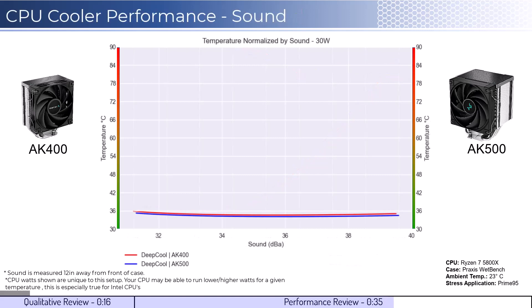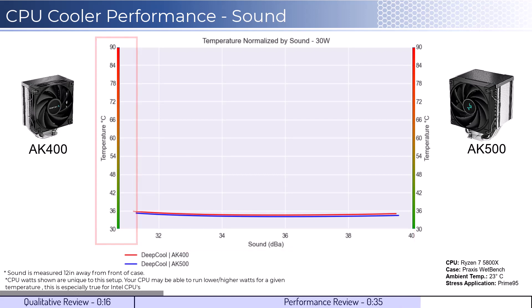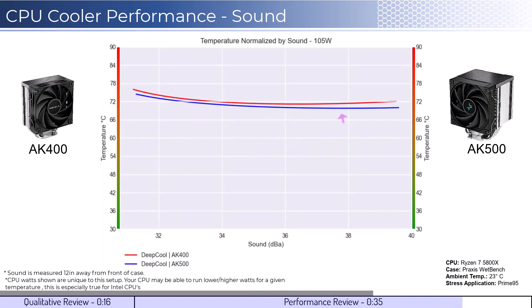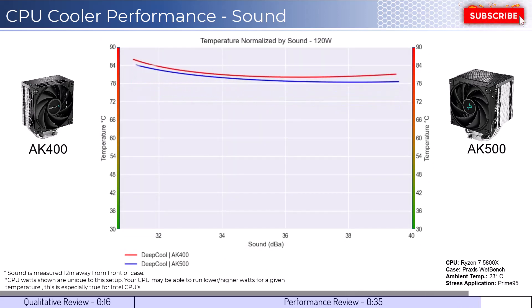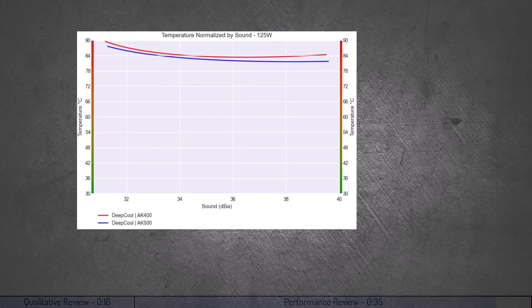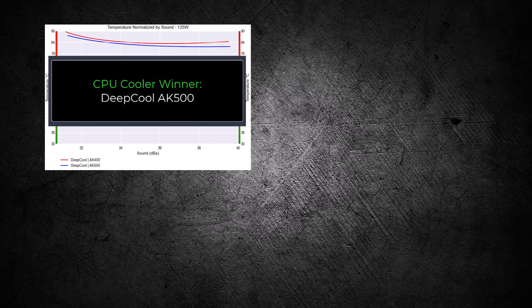For the second set of comparison, we will look at the performance for a given noise level. The graph shown has noise on the bottom axis, while keeping the temperatures on the side axis. Note that lower is still better for this graph. When comparing the coolers by normalized noise levels, we can see that both coolers perform similarly with an idle CPU. As we increase the watts to 105, the AK500 has slightly better cooling performance across comparable noise levels, and as we increase the watts to 125, we can see that this trend continues. Overall, the AK500 cooler has slightly better cooling performance for a given noise level, making it the winner for this comparison.